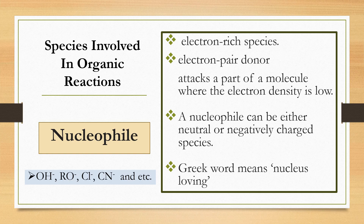The second species is the nucleophile. A nucleophile is an electron-rich species, also known as an electron-pair donor. It attacks the part of a molecule where electron density is low. Nucleophiles can be either neutral or negatively charged. In Greek, nucleophile means 'nucleus-loving.' Examples of nucleophiles include hydroxide ion, alkoxide ion, chloride ion, cyanide ion, and others. As long as the species carries a negative charge, it is considered a nucleophile.